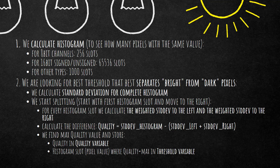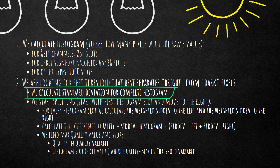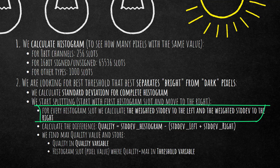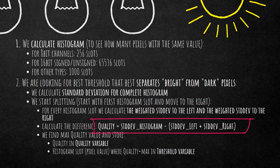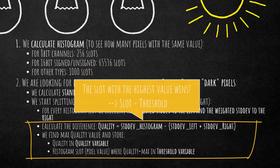The algorithm looks for the best threshold that separates bright from dark pixels. It computes the standard deviation for the complete histogram, then starts splitting based on these slots, moving from left to right. For each slot, the weighted standard deviation is computed for the left side and the right side. A fairly simple formula is used to compute the quality: it's the overall standard deviation minus the weighted standard deviation left of the slot plus the weighted standard deviation right of the slot. We then find the max quality value and write it into the quality variable, and the corresponding pixel or slot value is written into the threshold variable.